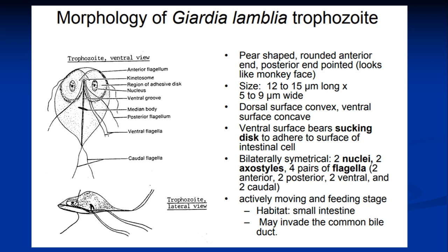Morphology of Giardia lamblia: Giardia lamblia completes its life cycle in two stages — the trophozoite stage and the cyst stage. Starting with the trophozoite stage, as you can see in this diagram, it is a pear-shaped organism having four pairs of flagella, meaning a total of eight flagella. It has two nuclei. Its ventral side is concave while the dorsal side is convex, which makes it a cup-like structure. Because of this cup-like structure, as seen in the bottom diagram, it can attach to surfaces — specifically binding to intestinal surfaces through a suction-like effect.